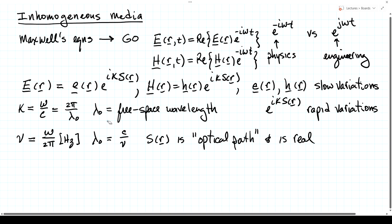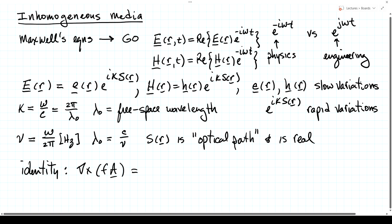In order to manipulate Maxwell's equations when we represent the fields as a vector times a scalar function, we need the following vector calculus identity: the curl of a scalar f times a vector a is equal to the scalar times the curl of the vector, plus the gradient of the scalar crossed with the vector. Because Maxwell's equations involve curls of electric and magnetic fields, and we're representing those fields in this form, this identity will be very important for us.